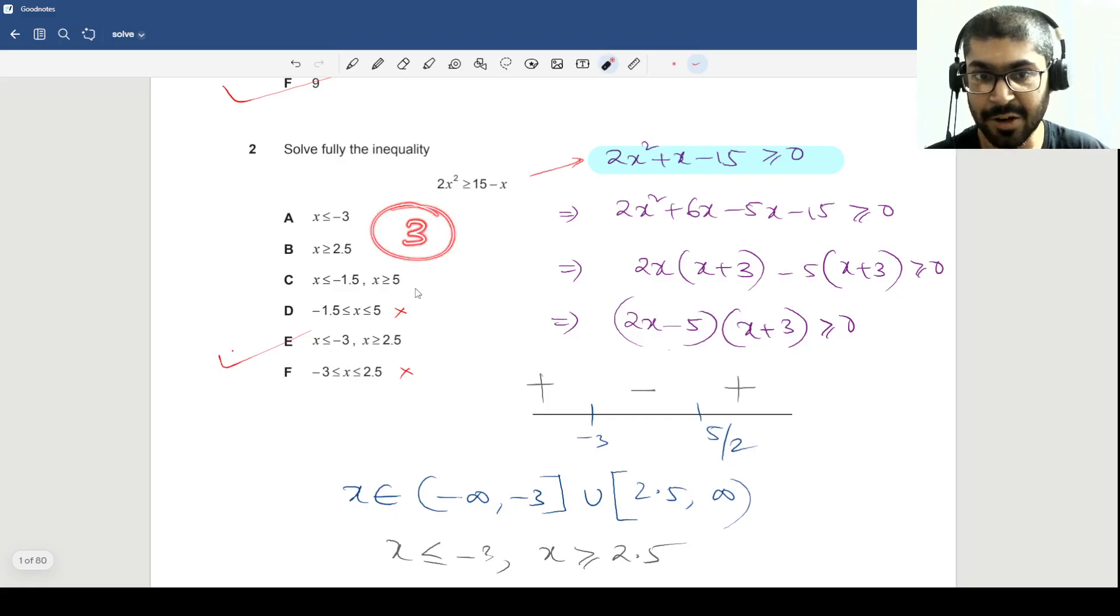So check with 3. So 2 into 3 square, you get 18 plus 3, 21. 3 holds. If 3 holds, that means this one is also rejected. So you end up with either these two options separately or these two options together. So just check two values and you should get it. If you check x equal to 3, we just check x equal to 3. So we know that this one holds. So B and E will hold.